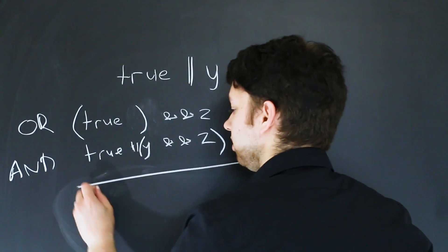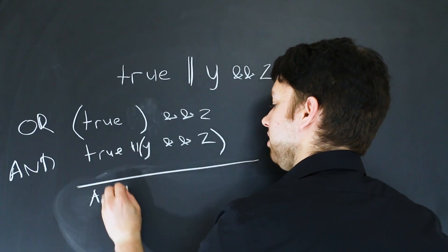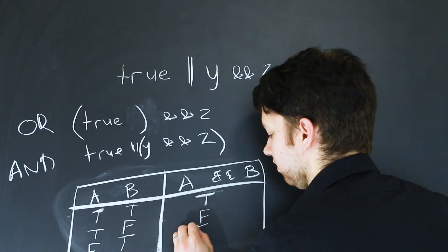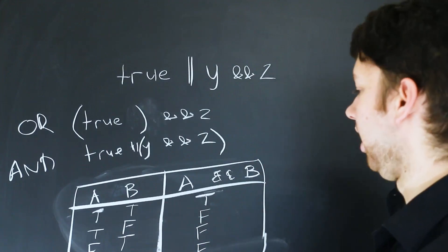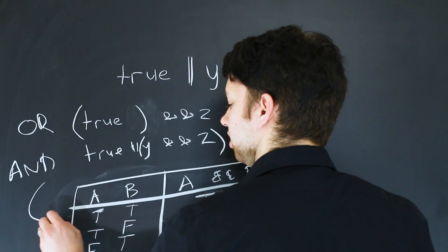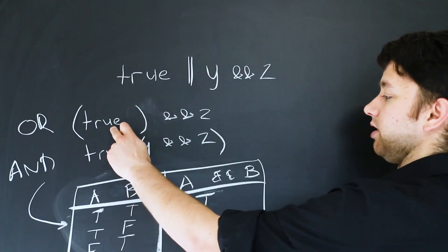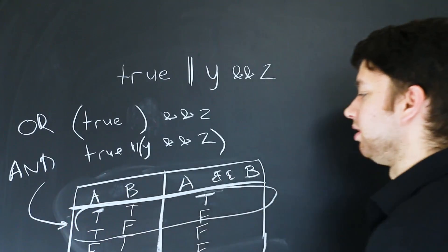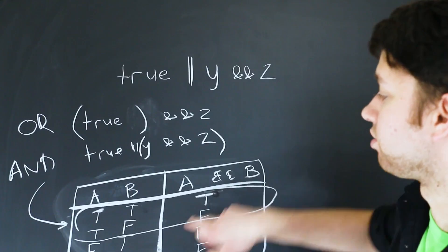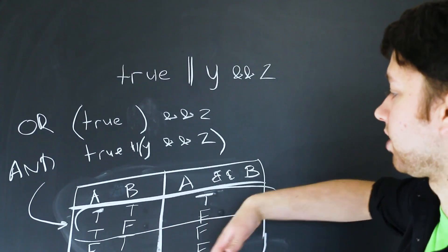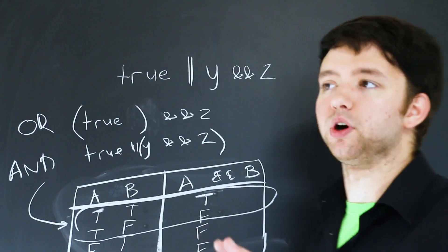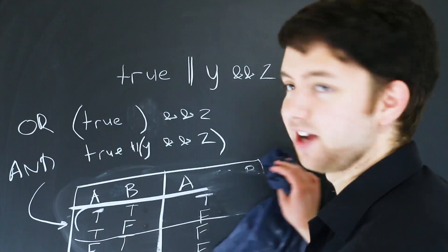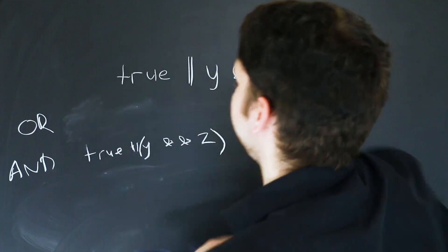We can simplify even further, because true AND z is just going to be z. You can see this in a truth table as well. With two inputs A and B and the output A AND B — filling in all possible values — we only need to look at the first two rows because A is true. When we look at those two rows, the output is always B: B is true, output is true; B is false, output is false. So we can get rid of A — this is all part of Boolean simplification. This whole expression simplifies down to just z.